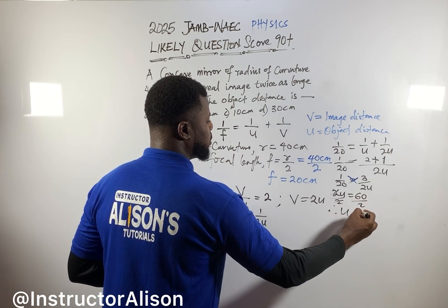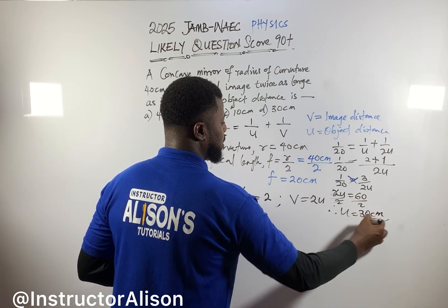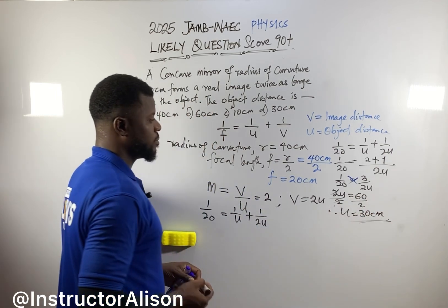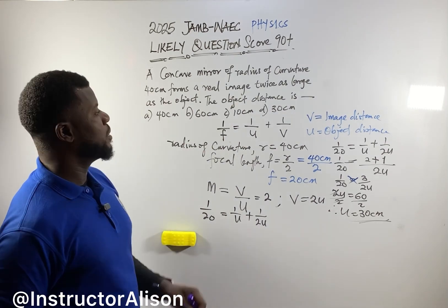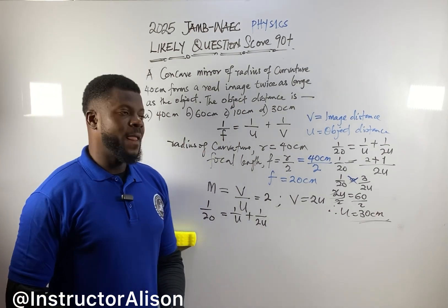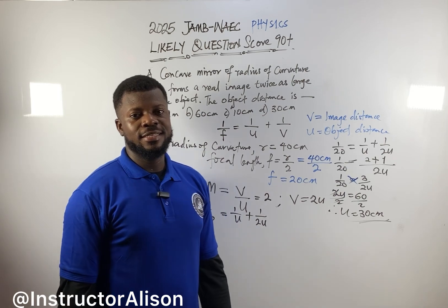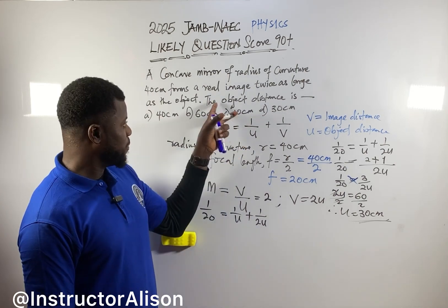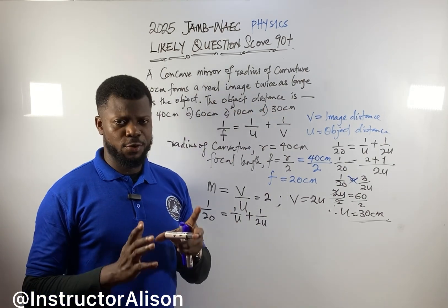Therefore u equals 60 divided by 2, which is 30 centimeters. So the object distance is 30 centimeters.